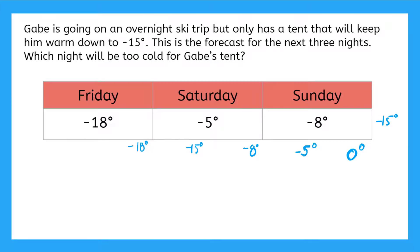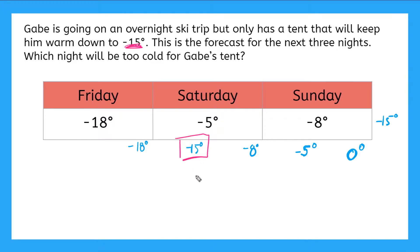So what we need to know is what temperature is colder than negative 15 degrees, because that's our limit here. If it's less than negative 15, it's too cold for Gabe's tent. So which of these numbers is colder than negative 15? Colder means smaller here, and smaller means we're going away from zero on our number line since these are negative numbers.